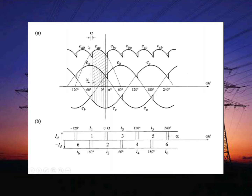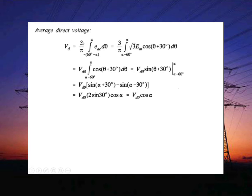Now if we give the ignition delay — if we provide the delay at alpha equal to zero degrees — delay means we turn on the thyristor after some time interval. So the delay angle is denoted by alpha. The conduction of the EAC phase — meaning valves 1 and 2 conducting — starts after this time alpha. To derive the expression of no-load DC voltage, the limit of EAC integration changes to minus 60 plus alpha. The conduction period is one-third of pi, and the limit becomes minus of sine from 60 minus alpha to alpha, of EAC d-theta.